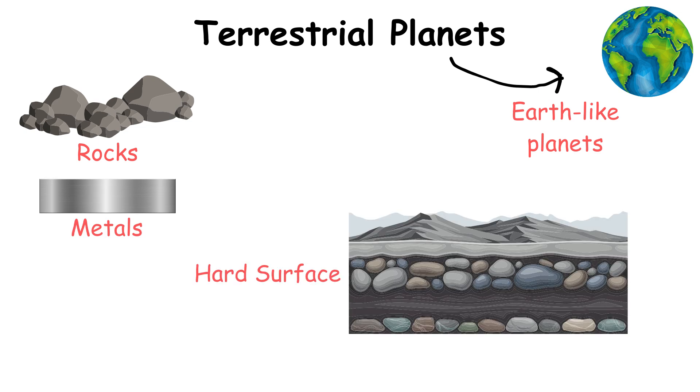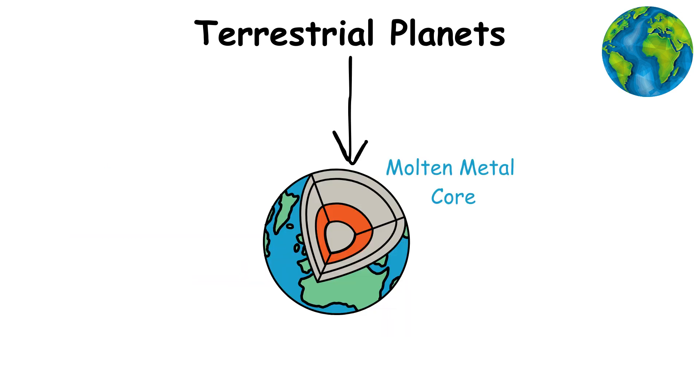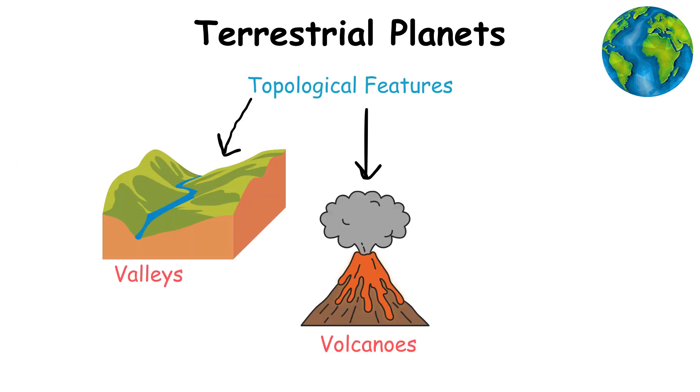Terrestrial planets are Earth-like planets made up of rocks or metals with a hard surface. Terrestrial planets also have a molten heavy metal core, few moons, and topological features such as valleys, volcanoes, and craters.